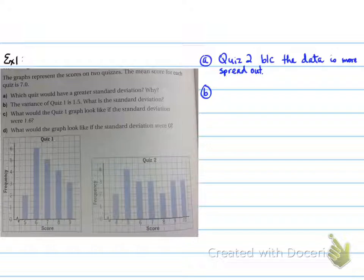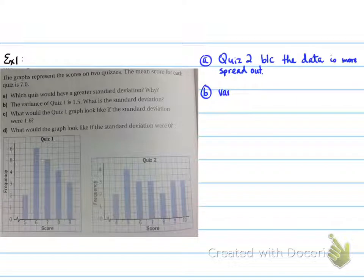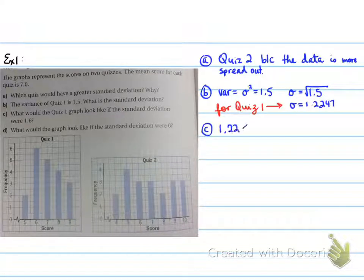The variance of quiz one is 1.5. What is the standard deviation? Since variance equals standard deviation squared, the standard deviation equals the square root of 1.5, which is 1.2247. That is the standard deviation for quiz one.